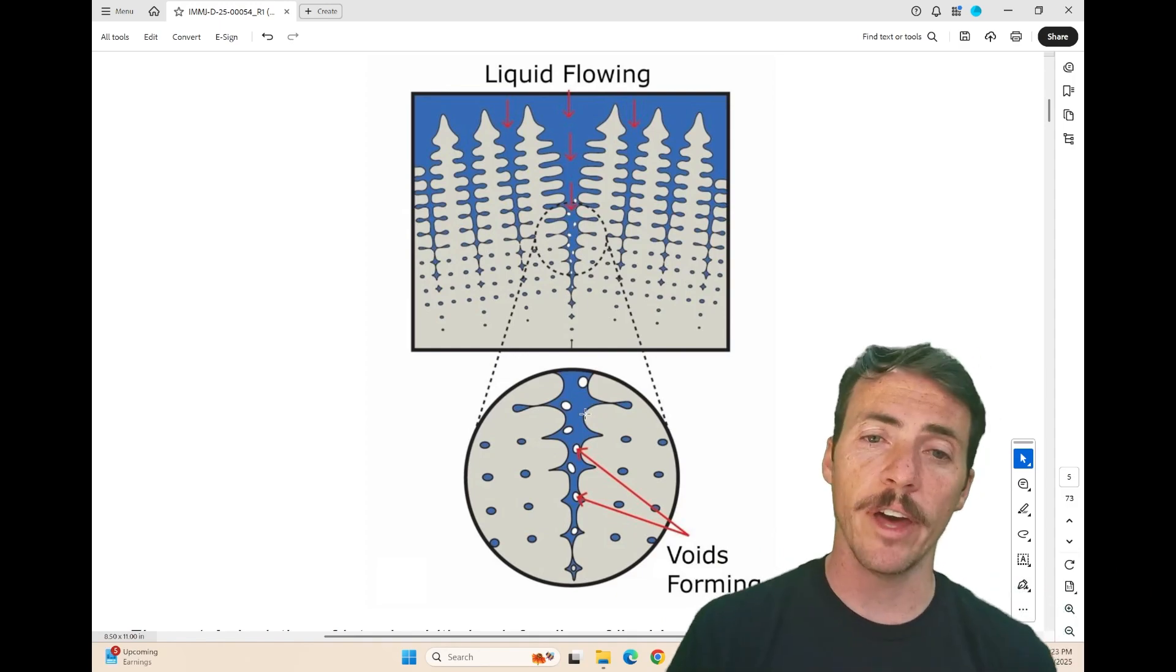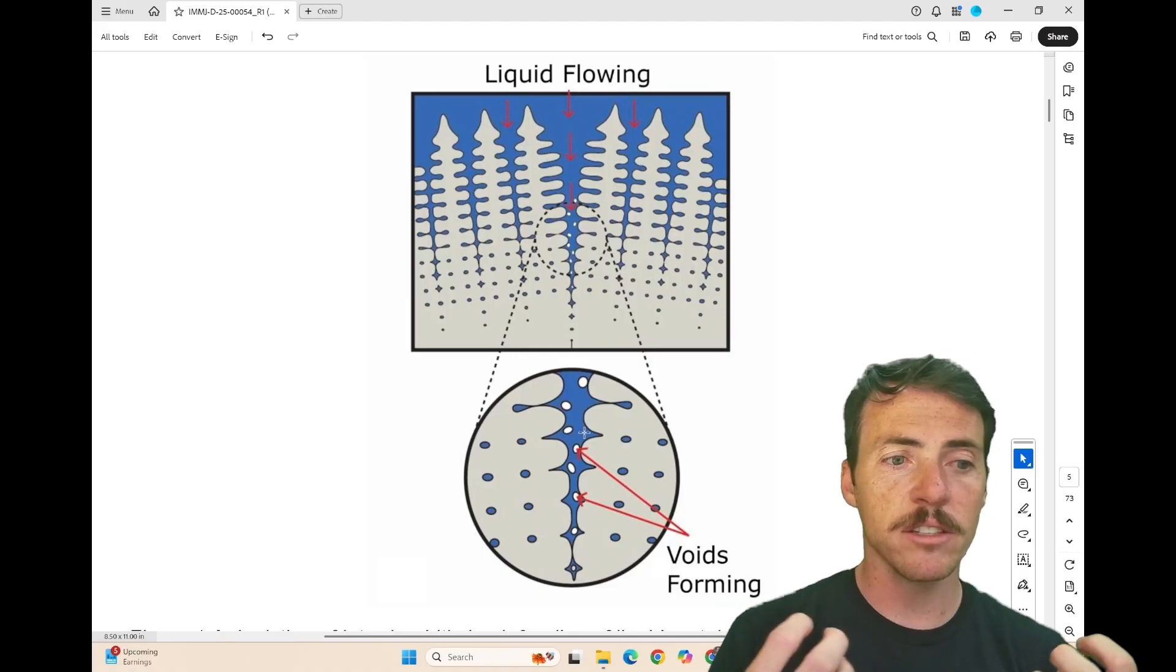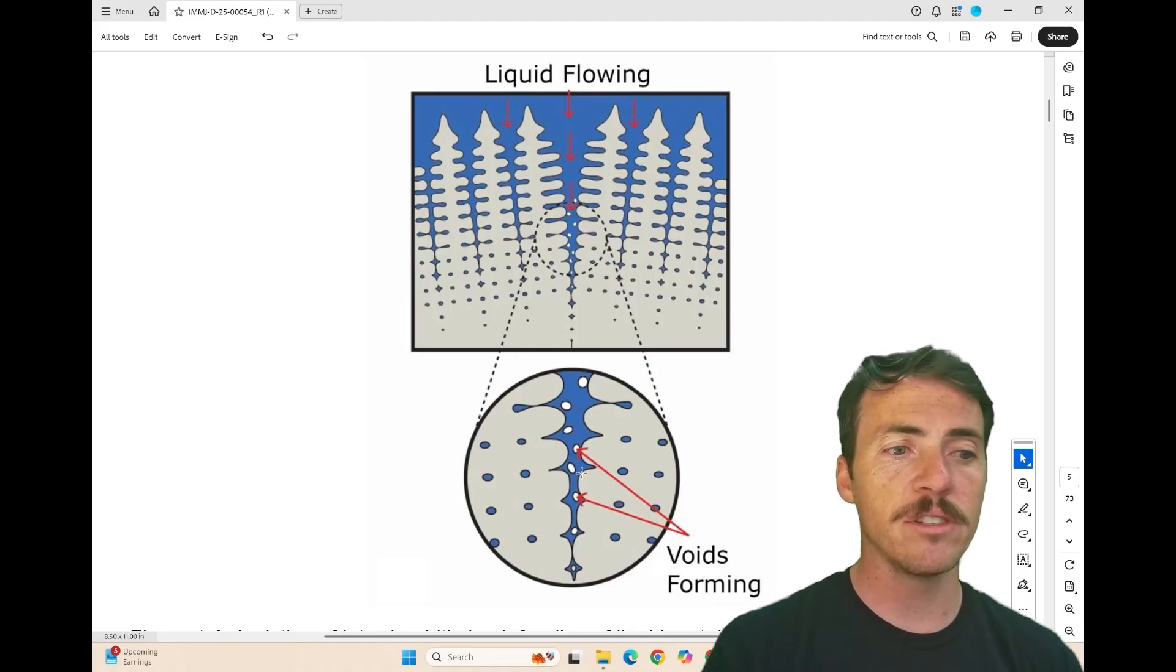And if it's not able to do that, if it's not able to flow quickly enough, for example, then as it shrinks, we're going to be left with these voids, and if those voids link together, they become cracks, and that is the root of this problem.